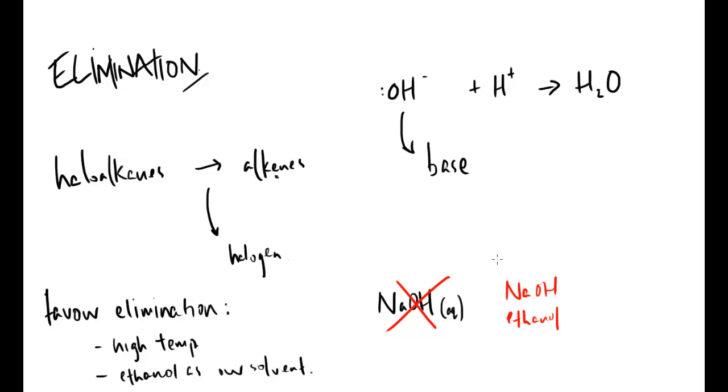And what we end up finding is that this favours elimination reactions. And so you may see in the exam potassium hydroxide in ethanol within the question. And that's a giveaway that we're going to be dealing with elimination, as well as obviously the production of the alkene, which is sometimes given in a reaction within the question.